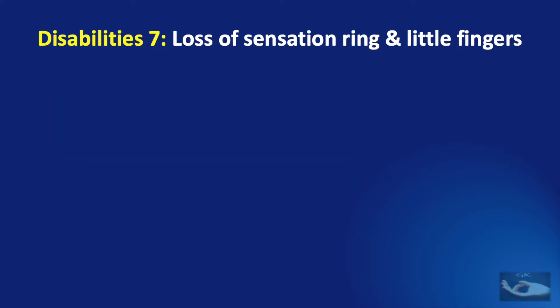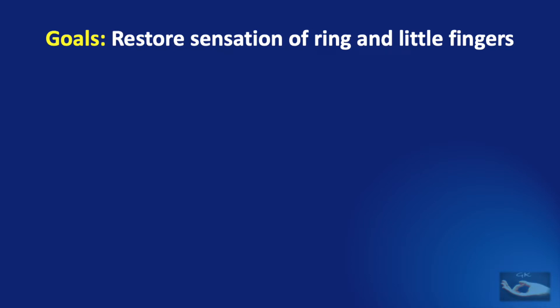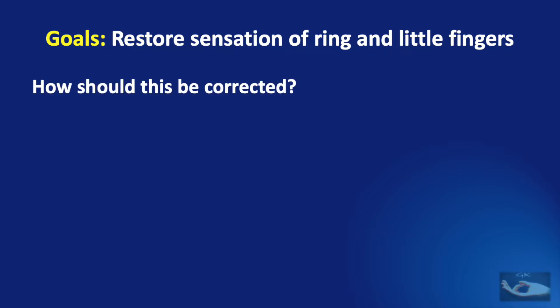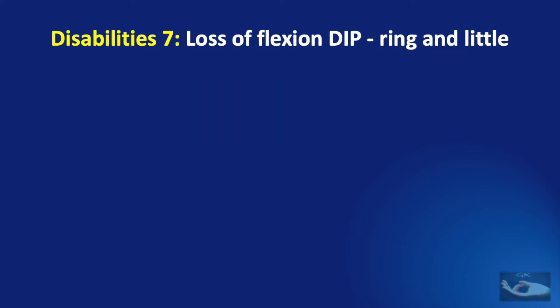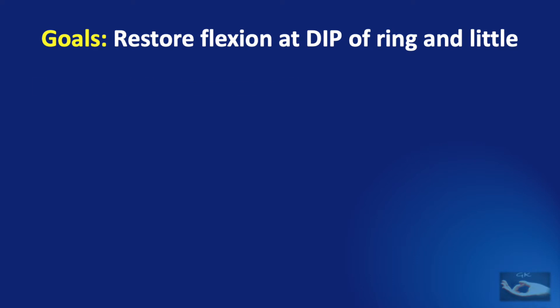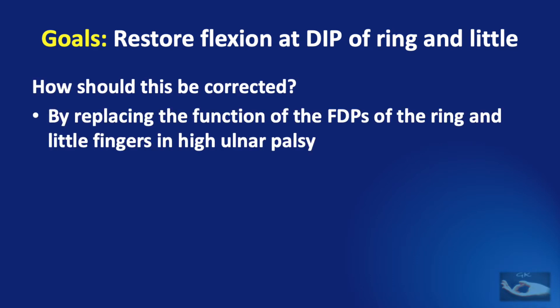Apart from these six major disabilities, two additional disabilities can occur. The first is the loss of sensation on the ring and little fingers, which should be corrected as far as possible by reconstructing the digital nerve to the little finger, as sensation on the ulnar border of the hand is very important. Additionally, in high ulnar nerve palsy, there is loss of flexion of the DIP joint of the ring and little fingers, which must be corrected by replacing the function of the flexor digitorum profundus of the ring and little fingers.